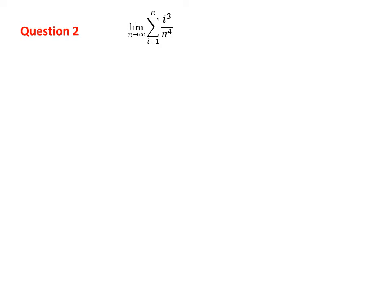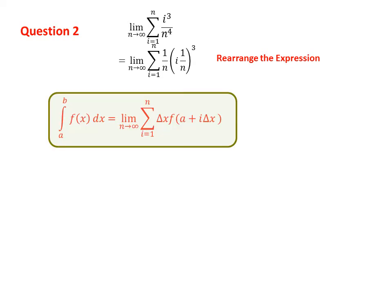Let us look at another question. This one is different from the previous one — here you cannot explicitly identify delta x right away, so you first have to rearrange the expression. After rearranging, I can now compare with the formula. Again, I catch delta x at two different places: one with an i index and one without. Clearly, delta x is 1 over n.